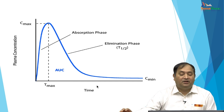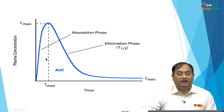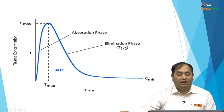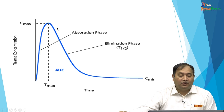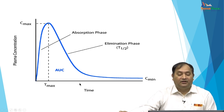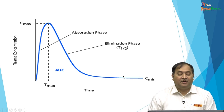Looking at the graph: a drug given orally achieves Cmax at a particular Tmax, and you can calculate the AUC to infinity. The ascending part is the absorption phase; once it reaches the peak, elimination also begins. You can calculate the half-life — around 5 to 10 elimination half-lives and the drug is almost 99.9% eliminated. When given IV, it reaches Cmax rapidly and then gets eliminated. This graph describes drug absorption, distribution, and elimination.